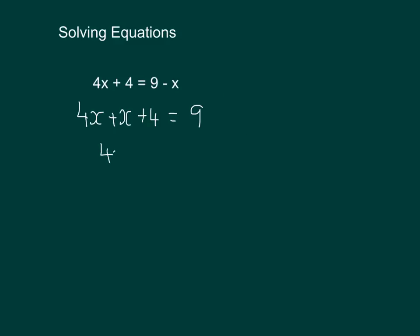So on this side, I'm going to have 4x plus x. And on this side, I'm going to have 9 take away 4. So if we simplify that then, 4x plus x gives us 5x. And 9 take away 4 gives us 5.